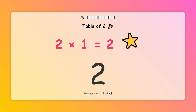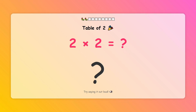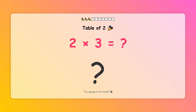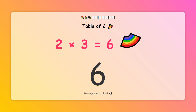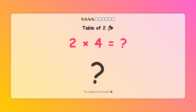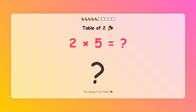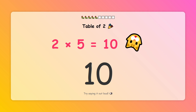2 times 1 equals 2. 2 times 2 equals 4. 2 times 3 equals 6. 2 times 4 equals 8. 2 times 5 equals 10.